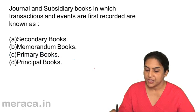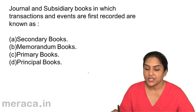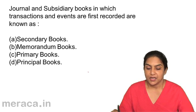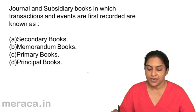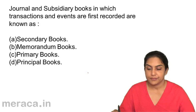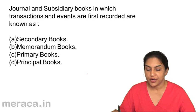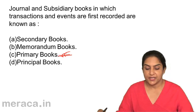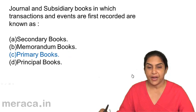Question 8: Journal and subsidiary books in which transactions and events are first recorded are known as — A: secondary books, B: memorandum books, C: primary books, D: principal books. These are called first-recorded books — primary books. Correct answer: option C, primary books.